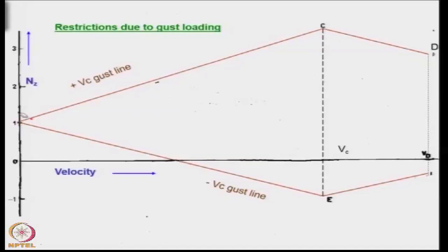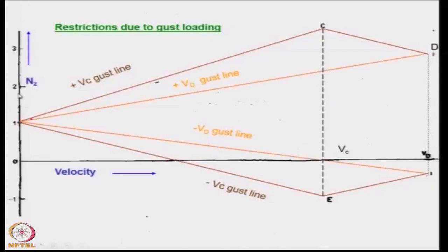It can be observed that the highest value of the delta nz happens at vc. And there is a symmetricity here, the same kind of velocity is expected to be acting also in a vertical downward gust. At design diving speed, the numerical value of the gust velocity is lower and hence the lines are inside the lines due to the gust acting at the cruise speed.